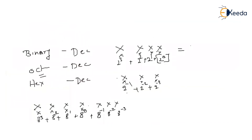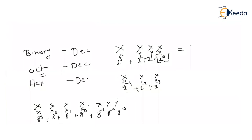Hexadecimal works the same way. For four hexadecimal digits xxxx, the weights are 16^0, 16^1, 16^2, and 16^3 — multiply by corresponding digits and add to form the result.